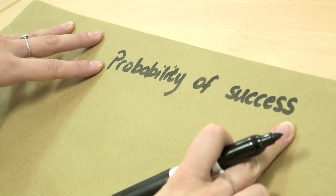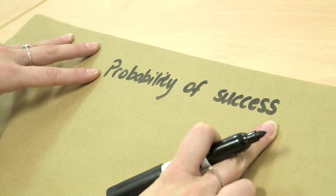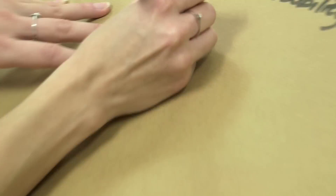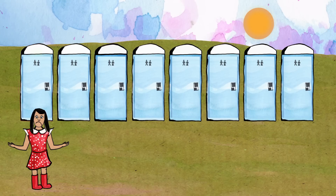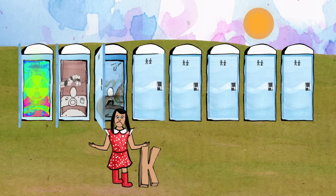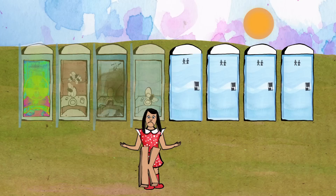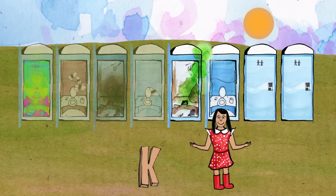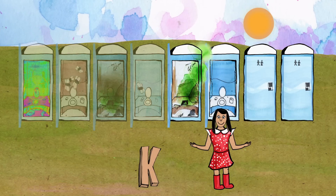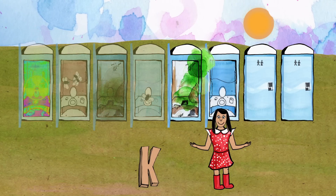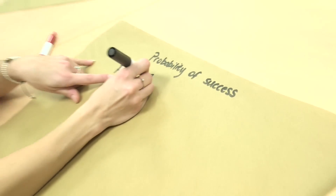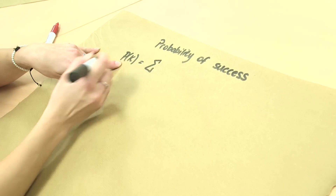The probability of success of choosing the best toilet I'm going to call P of K. K is when I know when to stop and when I'm going to choose the best toilet after that stopping point. Now the probability function is made up of the sum of two other probabilities.